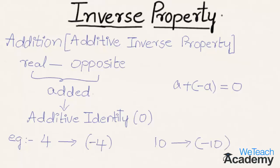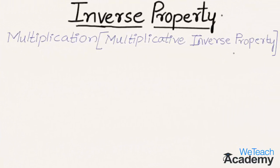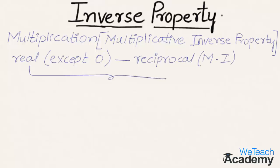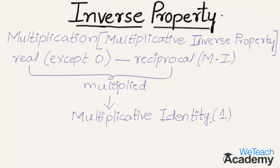Now let us discuss the inverse property of multiplication, also called the multiplicative inverse property. It states that for every real number except 0 there is another real number called its reciprocal or multiplicative inverse, such that when both numbers are multiplied together we get the multiplicative identity, that is 1. Symbolically, for a number a, the reciprocal of a is 1/a, and when both are multiplied we get 1.